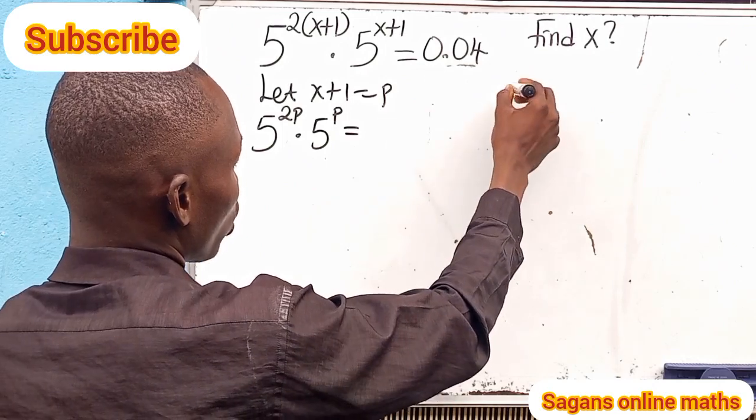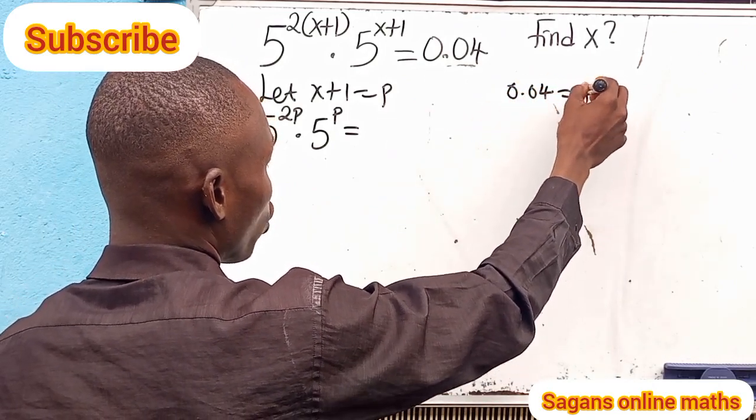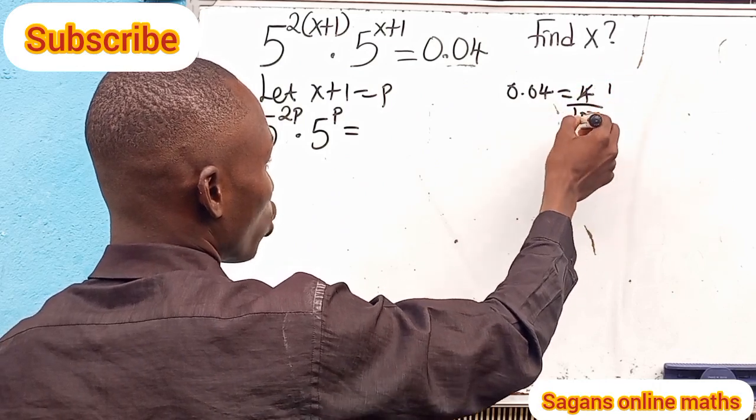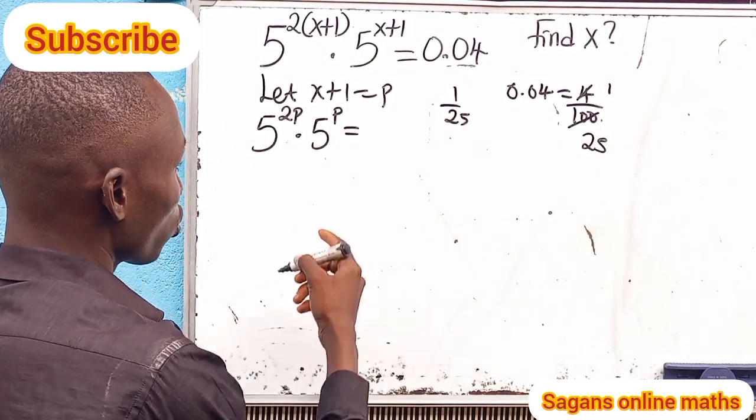This equals 0.04. Now let's rewrite this decimal. 0.04 equals 4 divided by 100, which is 1 over 25.